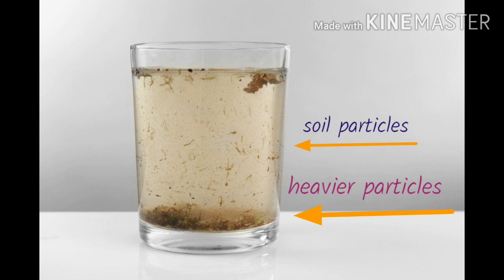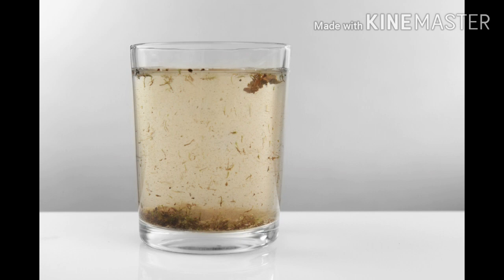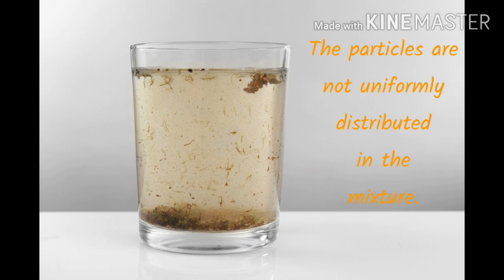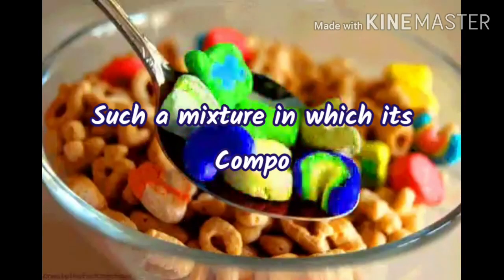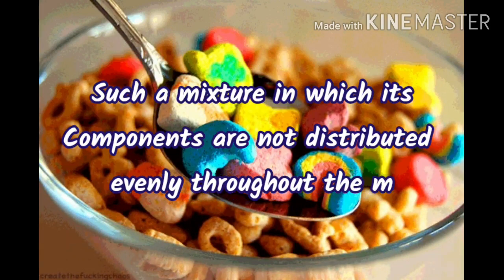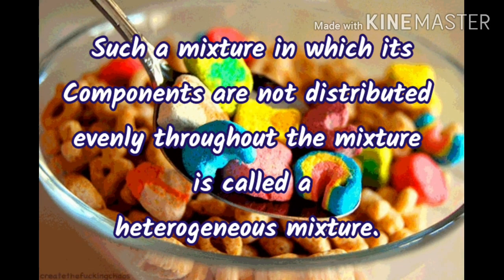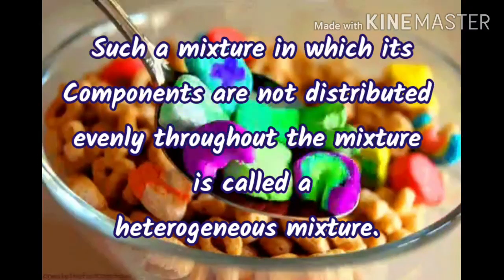Some particles are suspended and some are seen floating in water. In other words, the particles are not uniformly distributed in the mixture. Such a mixture in which its components are not distributed evenly throughout is called a heterogeneous mixture.